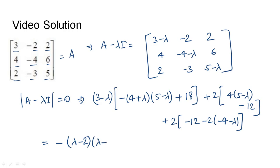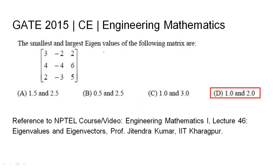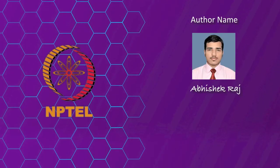Using this, we have the values of lambda as 1, 1, 2. So the eigenvalues are 1, 1, and 2. The maximum value of lambda is 2 and the minimum value is 1. Therefore, the smallest and largest eigenvalues of the matrix are 1 and 2, which is option D. The relevant NPTEL reference has been cited.